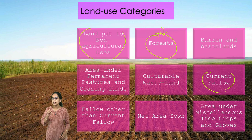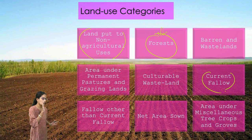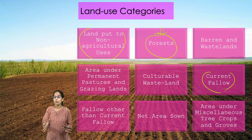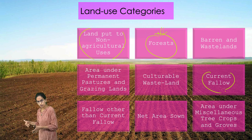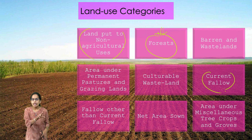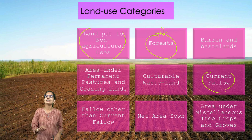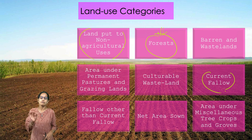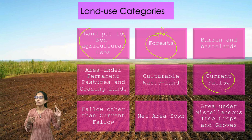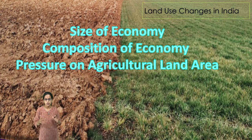Current fallow — land kept fallow for less than or equal to one year — has also increased, but this data is unreliable. If there is good rainfall, this value decreases; if there is a bad monsoon, the value increases. Since India is predominantly a monsoon land, current fallow can fluctuate year to year and we need data over a substantial period to understand it.